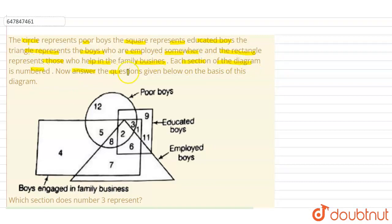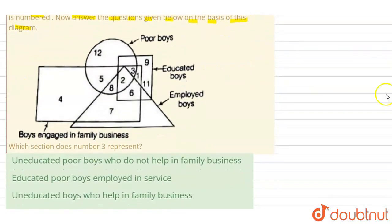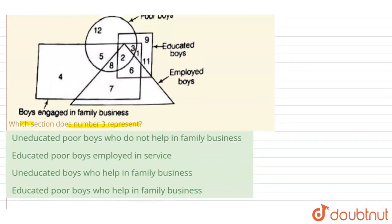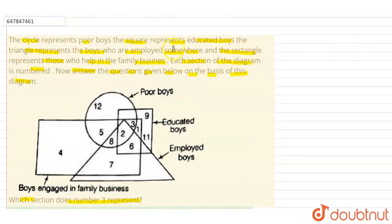Now, answer the question given on the basis of this diagram. What is the question? Which section does number 3 represent? The section is 3. What does the number 3 represent? We have four options given. Let's look at the question. What does the number 3 represent?